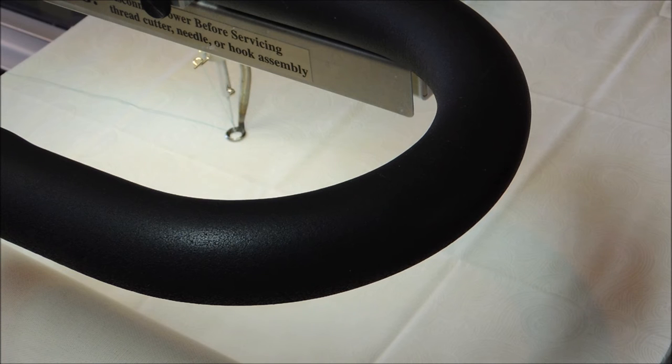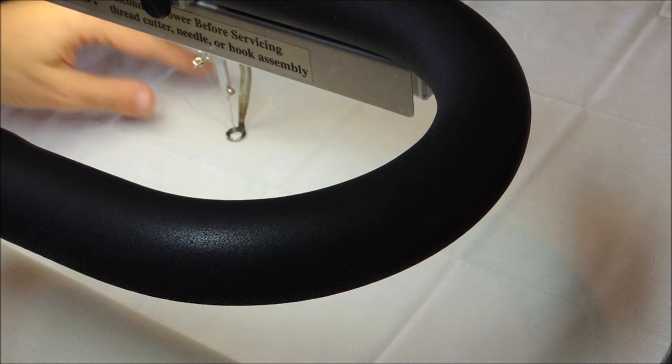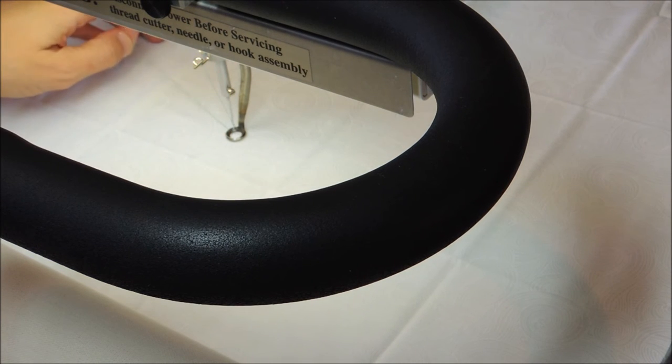Now I've moved that same fat quarter over to my long arm. And for those of you who do not have a long arm, I still think that there might be a few tips that you can find as I'm talking through this process that might be beneficial to you even if you're quilting on your domestic machine. So I've moved the same fat quarter set over to my long arm and I have the same 50 weight Aurifil 1148 green thread loaded onto the machine.